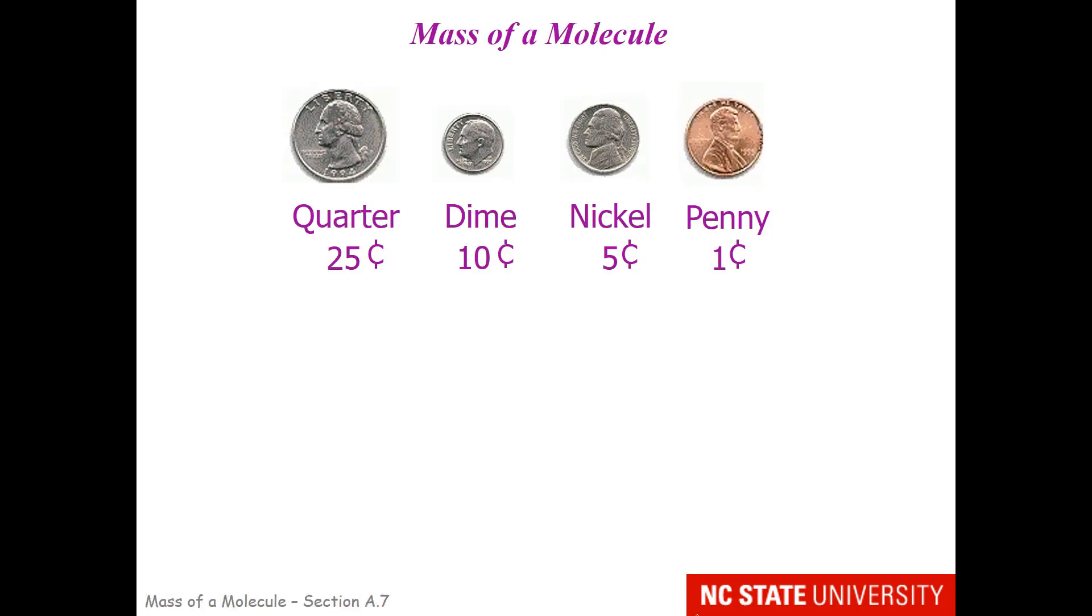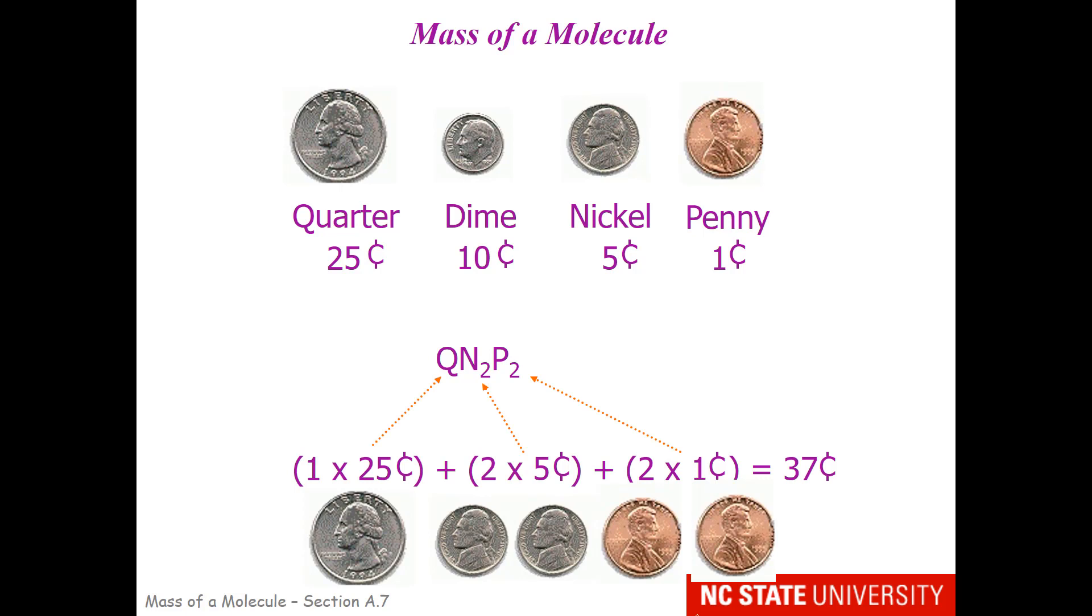Our last topic in this section is mass of a molecule. So if you're familiar with U.S. currency, you know that a quarter is worth 25 cents, a dime worth 10 cents, a nickel worth 5 cents, and a penny worth 1 cent. So if you had in your hand one quarter, two nickels, and two pennies, I think you would know how much change that is. So I've deliberately sort of written this in sort of chemical formula, right? This is the molecule QN2P2, which means one quarter, two nickels, two pennies. If you're asked how much is this worth in currency, you're going to do this mental exercise. You're going to say, okay, one quarter worth 25 cents. Two nickels, each worth 5 cents. Two pennies, each worth 1 cent. There is your 37 cents. This is the operation we're going to need to use for mass of a molecule.